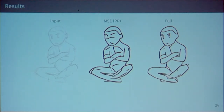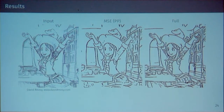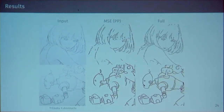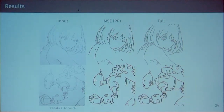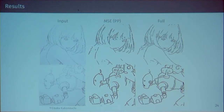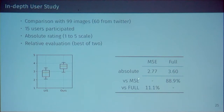Here are more results. This is a fairly hard result with lots of overlapping lines, and it does a fairly good job. Here is a famous Japanese illustrator — in the top row, many missing lines get completed, which is fairly important. High accuracy here is not really reflected in the loss. These details seem like a small difference in terms of loss, but visually it's fairly jarring. By using the full approach, we are able to recover these things and get fairly good performance. In a user test comparing with MSE only on roughly 100 images, we get statistically significant improvements.